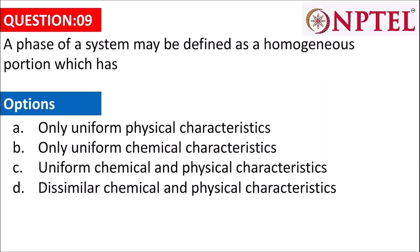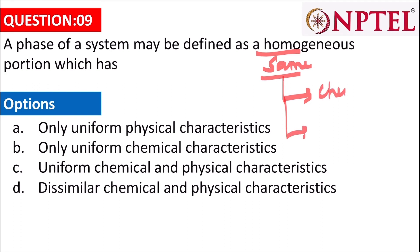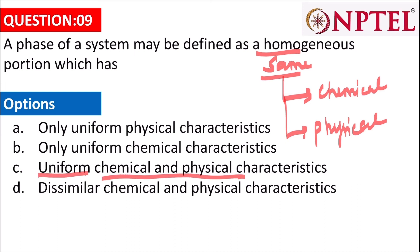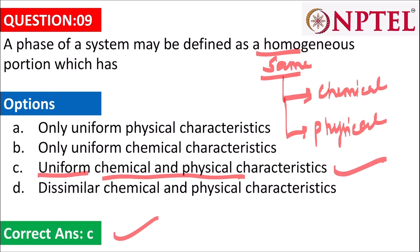The next question says a phase of a system may be defined as a homogeneous portion. Homogeneous means the same properties are everywhere. A system is said to be homogeneous when it has uniform chemical and physical characteristics. So the answer is C. Dissimilar properties would mean heterogeneous.